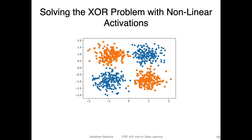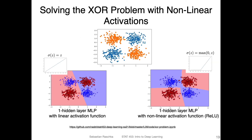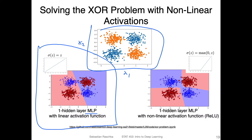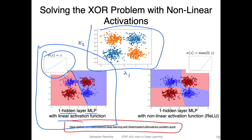With that, we can solve the XOR problem using nonlinear activation functions, which allow us to make complex decision boundaries. Here is a toy dataset — I made just two features, x1 and x2, two classes: the orange squares and the blue dots. On the left-hand side, I applied a multi-layer perceptron with one hidden layer and a linear activation function. You can see that it produces a linear decision boundary, even though we have a hidden layer. You can check the code yourself under the link shown.